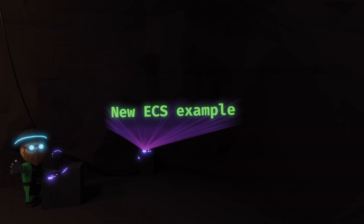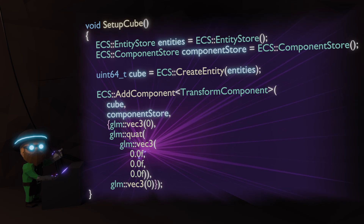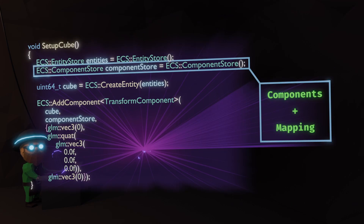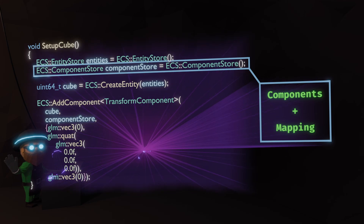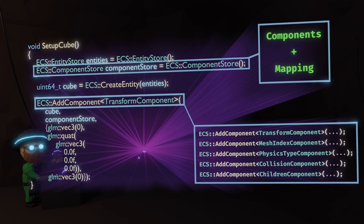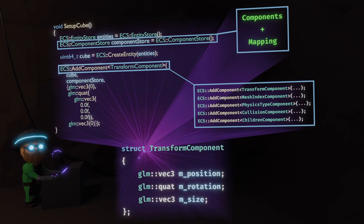Now let me show you how the same thing works in my new entity component system. Notice how we've streamlined everything. Instead of a mapper we only have component store — it stores both the components themselves and their relations to entities. And here's the best part: adding a component is now dynamic. This one function can take any component and add it to the component store. No extra boilerplate needed. The big difference is that now the transform component struct holds just one transform component. It's much easier to work with.